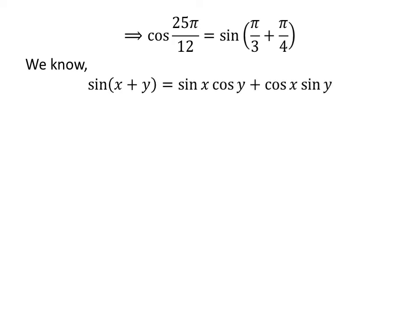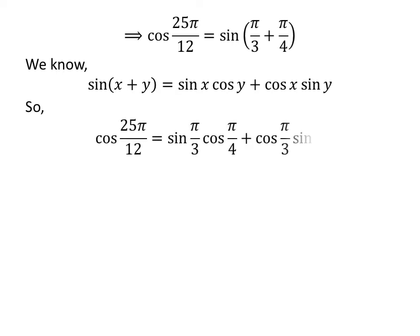We know the identity: sin(x + y) = sin(x)cos(y) + cos(x)sin(y). The trigonometric identity is shown in the upper right corner of this video. Applying the above identity gives us cosine of 25 times pi upon 12 is equal to sine of pi upon 3 times cosine of pi upon 4 plus cosine of pi upon 3 times sine of pi upon 4.